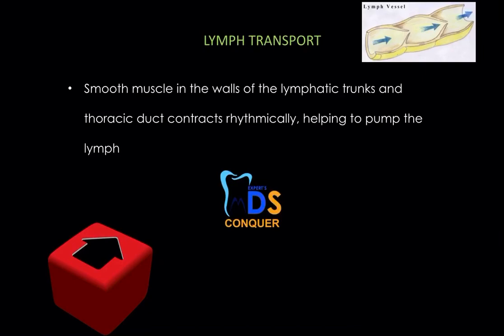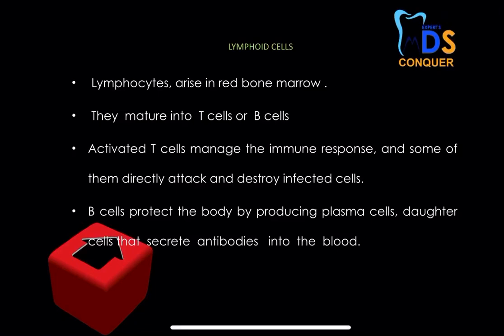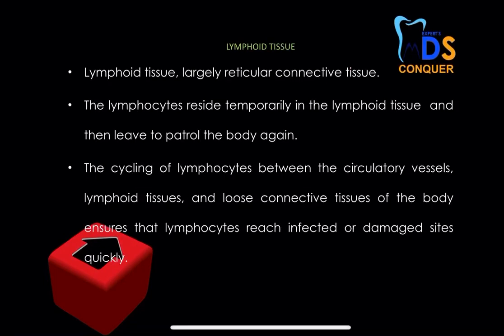The lymphoid cells are the lymphocytes, which arise in the red bone marrow and mature to form T-cells and B-cells. Activated T-cells manage the immune system — they directly attack and destroy infected cells. B-cells are mainly responsible for producing plasma cells, which are very important to secrete antibodies.